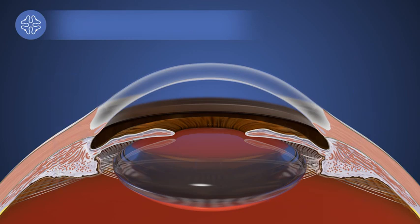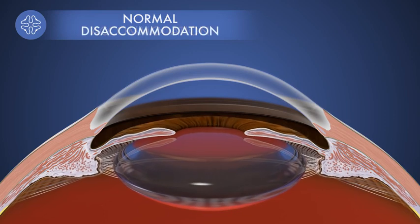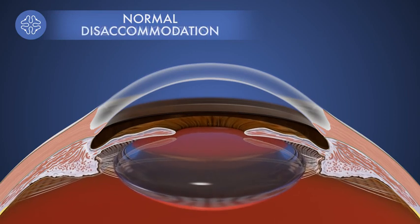When the ciliary body contracts, the lens moves forward and becomes more spherical as tension on the zonules is relaxed. When the ciliary body relaxes, the zonules force the capsular bag to flatten the lens and move it backwards. This movement changes the focal point of the lens from near to far as the lens transitions from accommodation to disaccommodation.